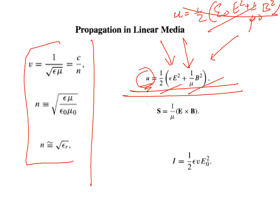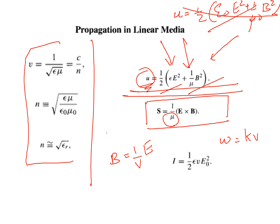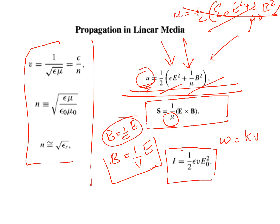The Poynting vector — we learned S equal to 1 by mu 0 times E cross B for vacuum — but for a linear homogeneous medium, S equal to 1 by mu times E cross B; it is not mu 0. Also, for a monochromatic plane wave, the frequency omega is constant and related to the wave number by omega equal to kv — it was kc for vacuum, here it is kv. And B is related to the electric field by B equal to 1 by v times E, whereas for vacuum it was 1 by c times E. The intensity is given by I equal to 1 by 2 epsilon v times E 0 squared, where we use epsilon.